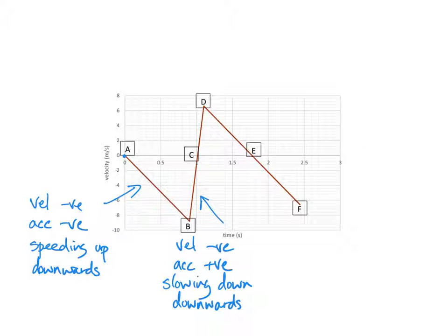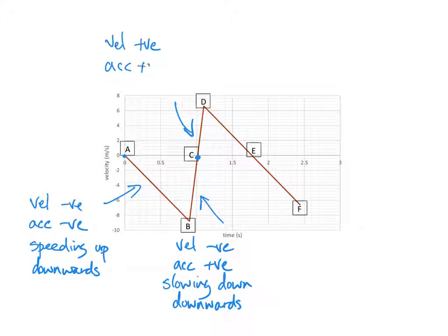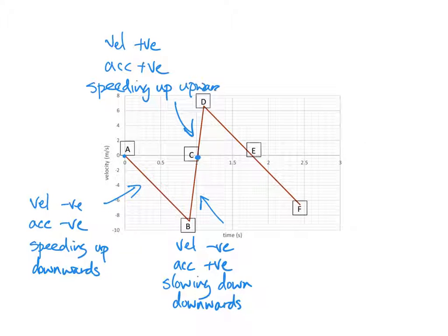Point C is when it stops squashing — when it changes from squashing down and the ball starts to expand again. So between C and D the ball is expanding. The velocity is positive and because the line is sloping up the acceleration is positive as well, so we've got speeding up upwards. Physically what's happening is the ball is bouncing back, expanding again having squashed when it hit the ground.